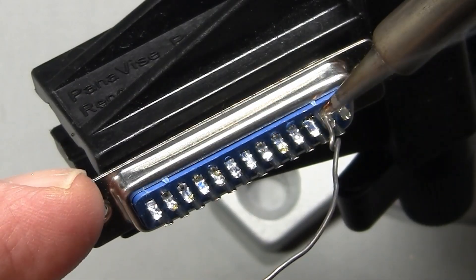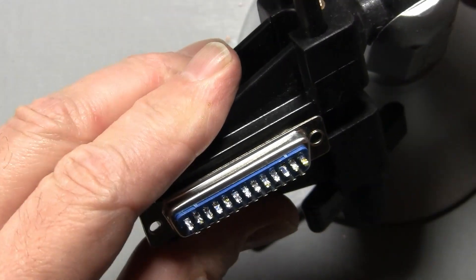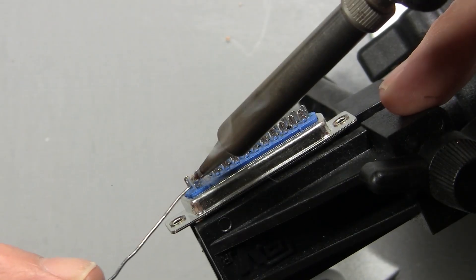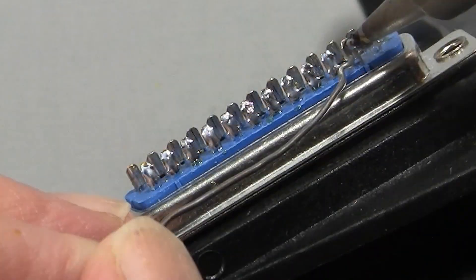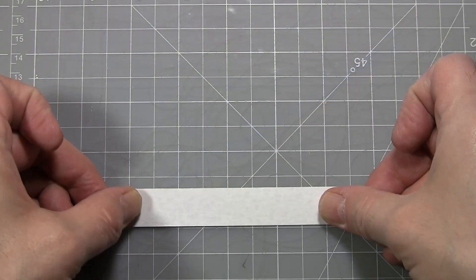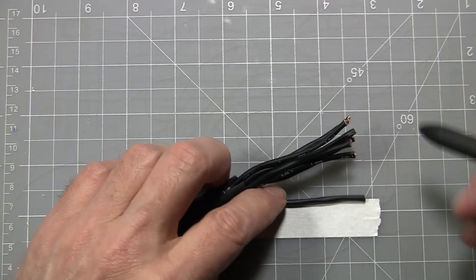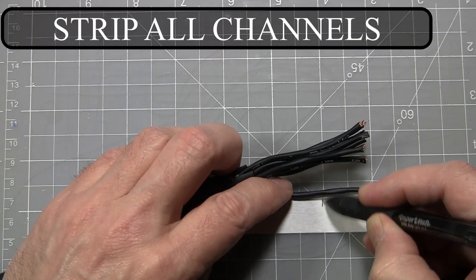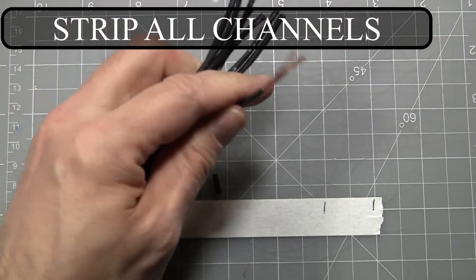On the DB25, when you're tinning the connector, you want to just slightly underfill the cups to keep the connector neat. When wiring multi-channel connectors, I like to make a template with artist tape so everything I cut will be the same size. I want to strip all channels the same amount even though they're different lengths.